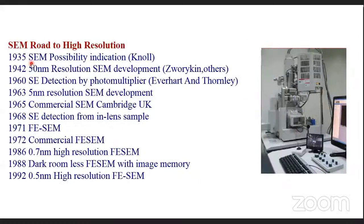We have different kinds of SEMs. Generally, when we talk about SEMs, we classify them into two types. One is the tungsten filament thermionic emission SEM, and another is the field emission scanning electron microscope. If you want better quality images and better resolution, you should go for the field emission scanning electron microscope. If lower resolution and lower magnification are acceptable, the tungsten-based thermionic emission SEM is fine.